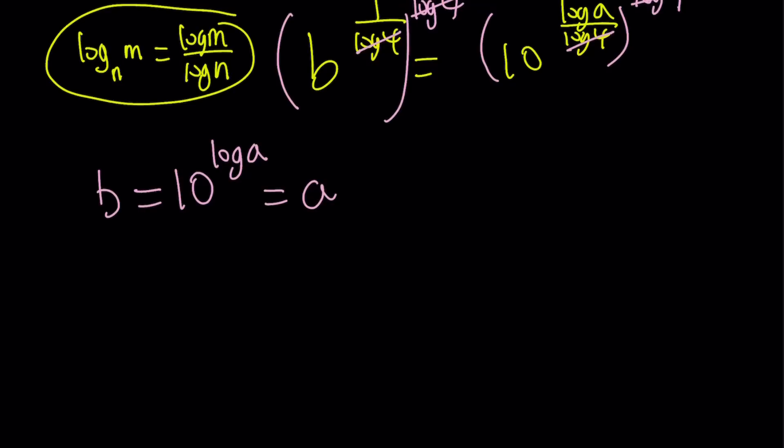Because we have this nice property, if you have x to the power log of something, let's call that z, with base x, this is always equal to z. So when these two bases are the same, the answer is z, or that number, that thing. In this case, it's a.